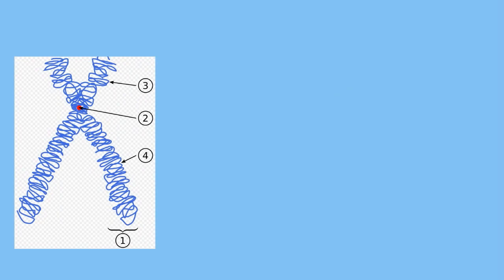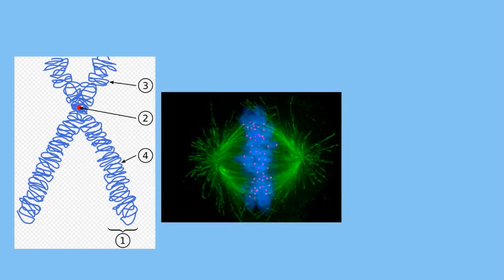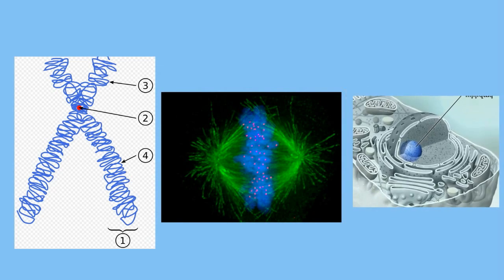So in summary, during prophase, chromosomes appear, spindle fibers appear and attach to the centromere, and finally the nuclear membrane begins to break down.